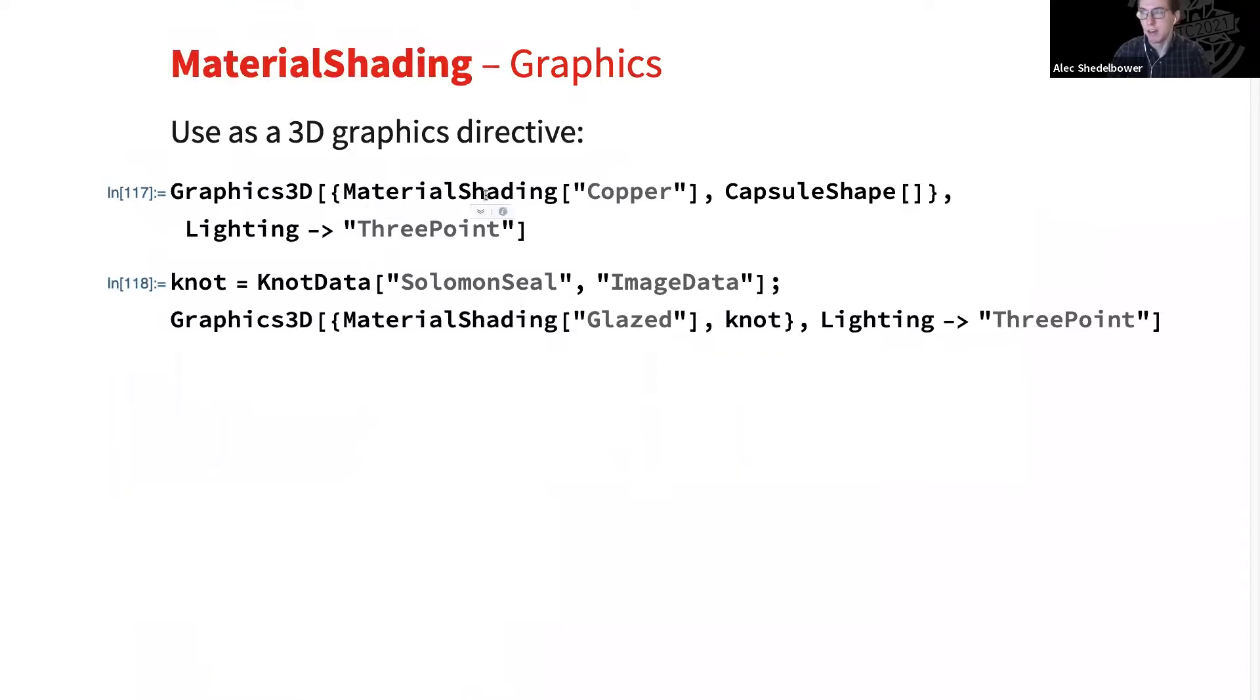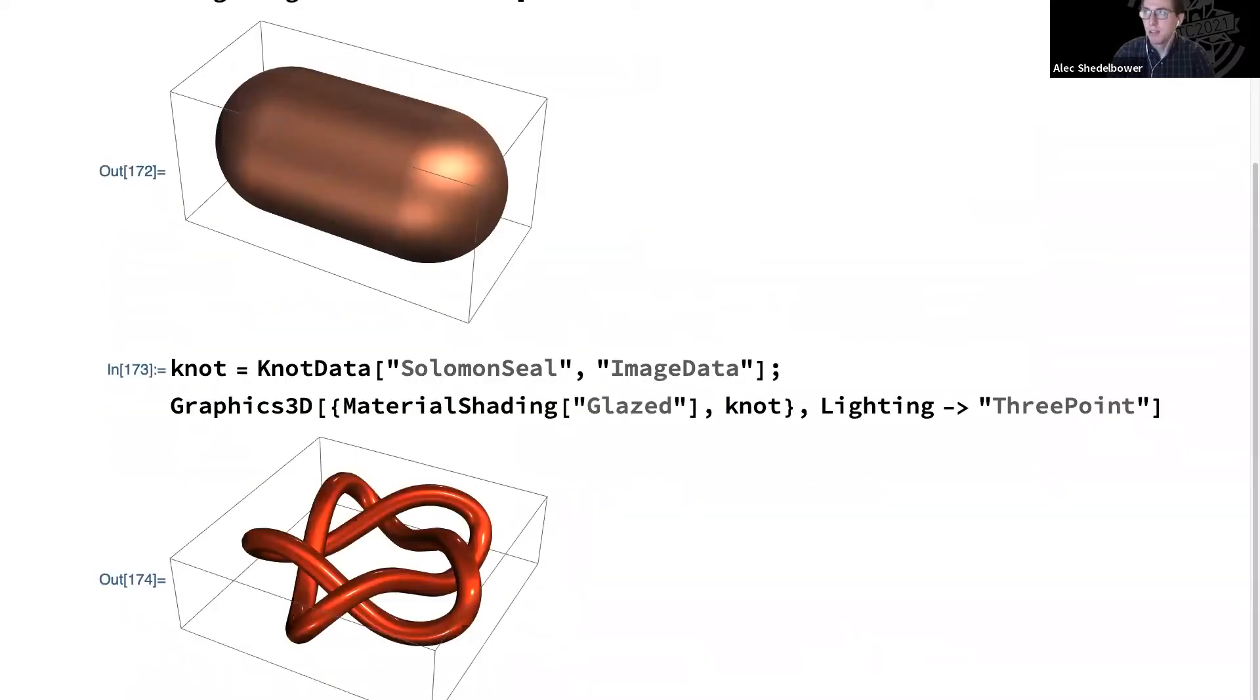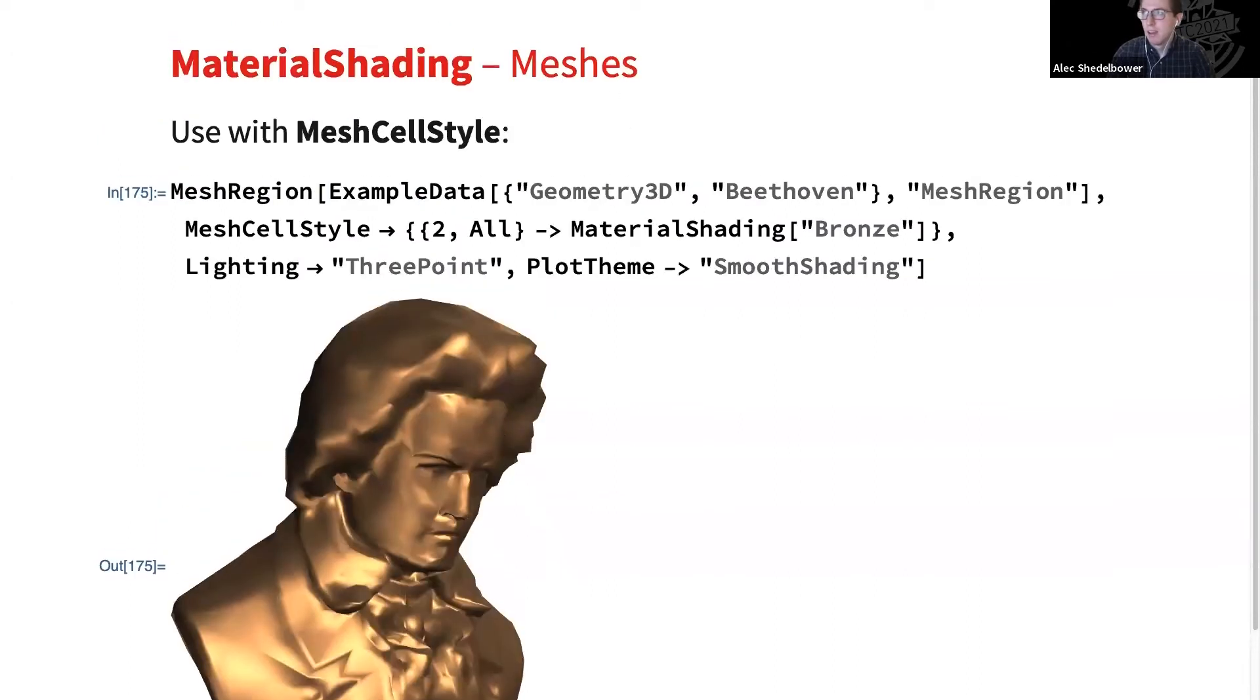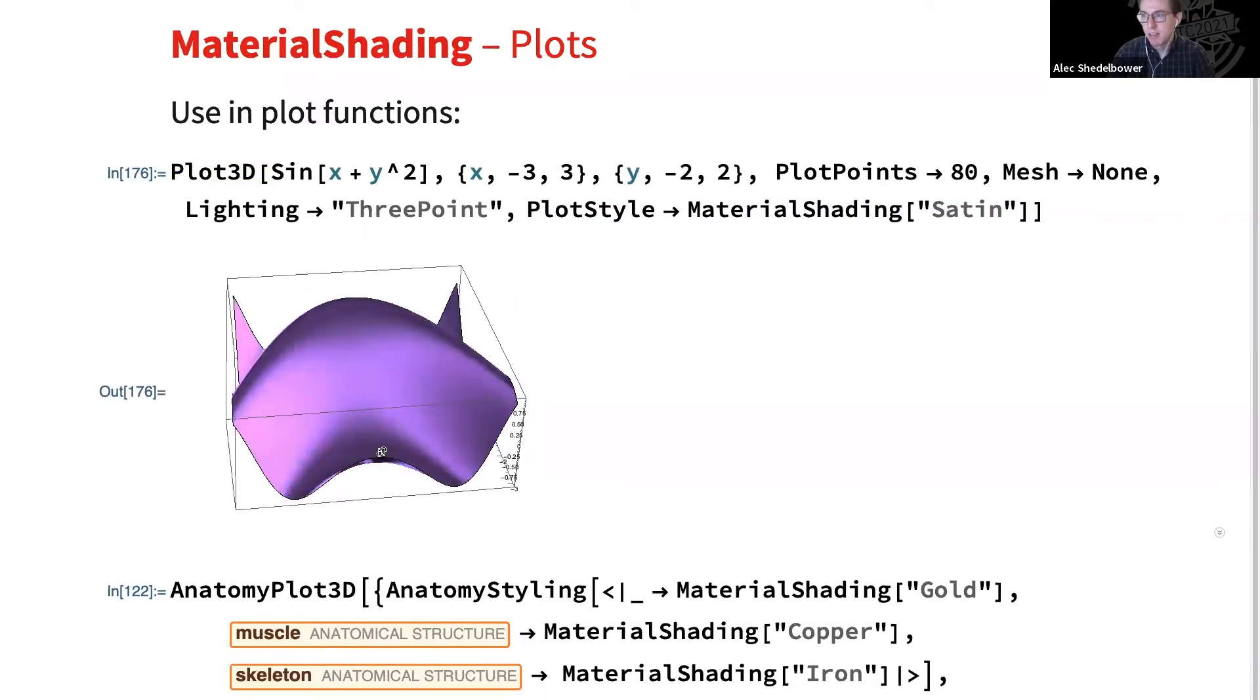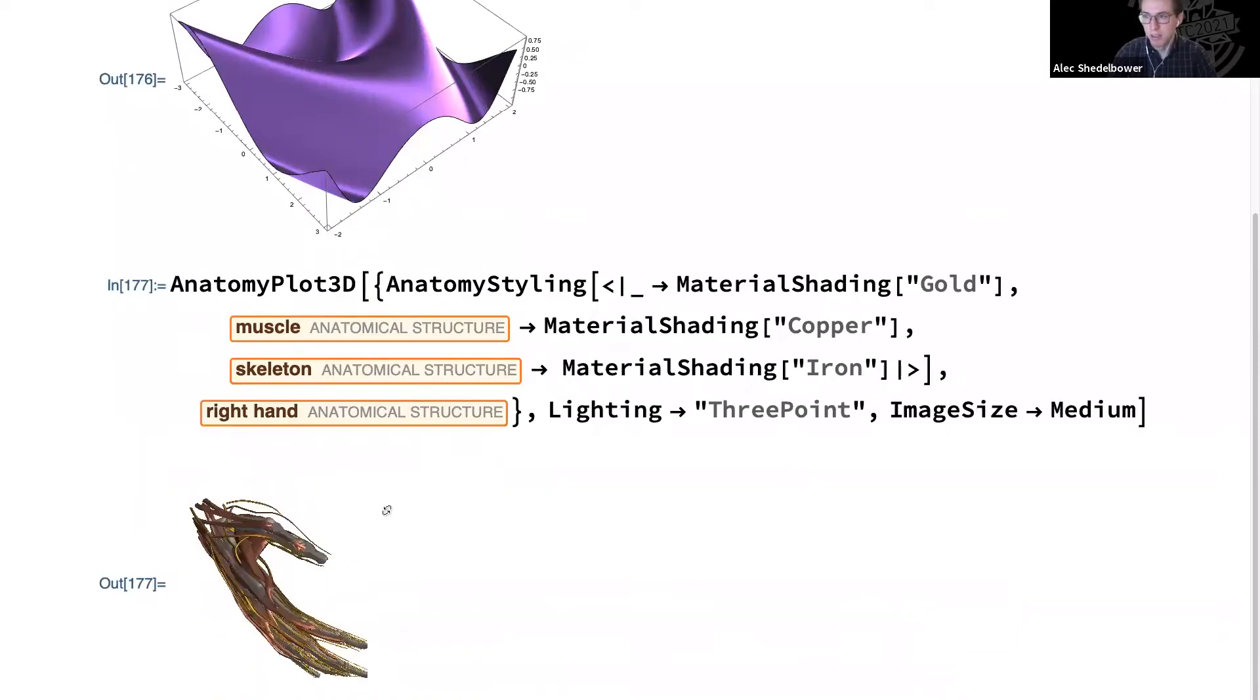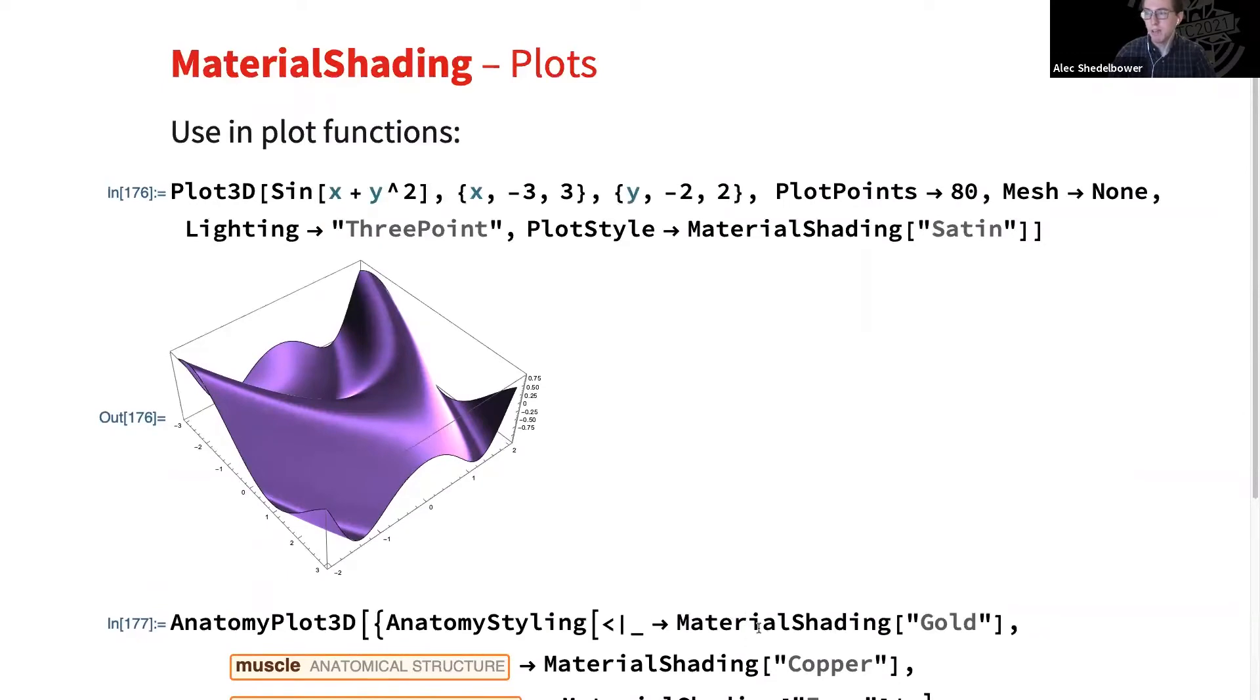As far as where we can use MaterialShading, like we just saw using Graphics3D like any other directive. So here we have our copper capsule or a red glaze knot. You can also use it in meshes with MeshCellStyle. So here we set our MeshCellStyle to be bronze. And that will give us our bronze Beethoven here, which looks pretty nice. And then it also works in our plot functions. So things like Plot3D, you can use PlotStyle and pass in a MaterialShading directive. So here we can have a nice silky smooth satin plot. It also works for our more specialized plots, such as here we have AnatomyPlot3D, where we'll plot a hand, but we'll set its skeleton to be made of iron, its muscle fibers to be made of copper, and its arteries to be made of gold.